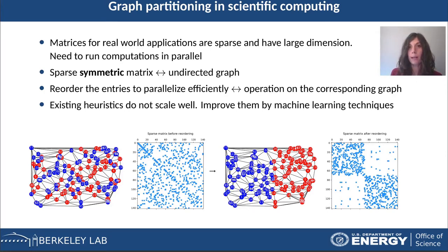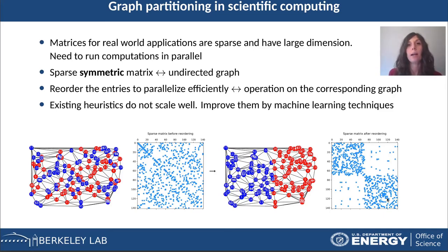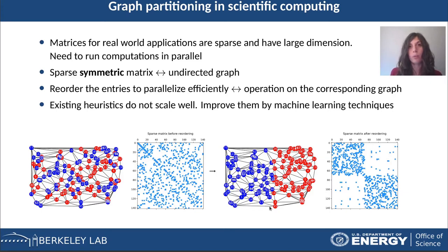Our goal, in order to parallelize efficiently, is to reorder the rows and columns of the sparse matrix such that the matrix is in block diagonal form, where the number of off-diagonal entries is minimized, but also the two blocks have approximately the same size. From the point of view of the graph, this means dividing the vertices into two subsets with the connections between them minimized, and such that the two subsets have approximately the same size.